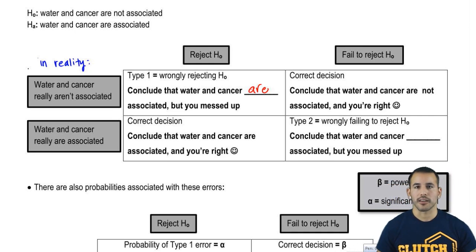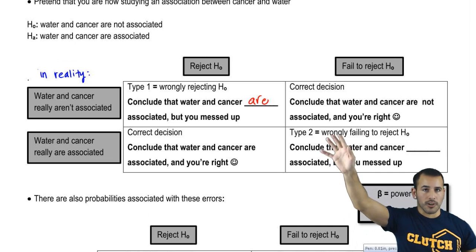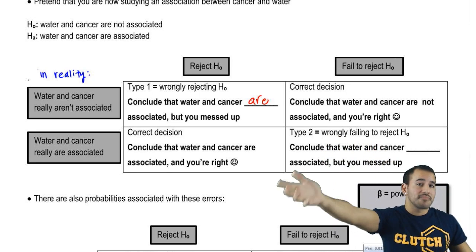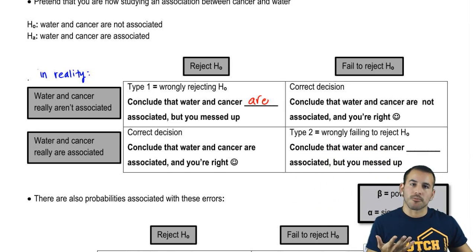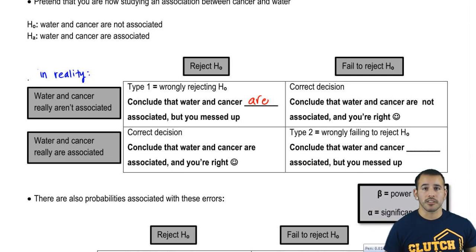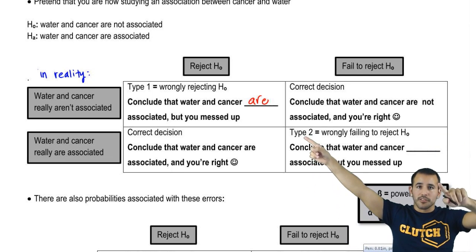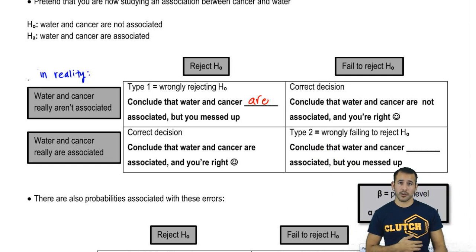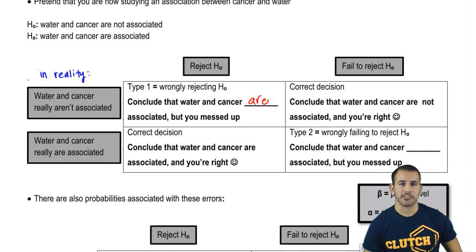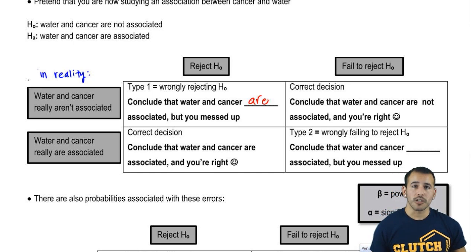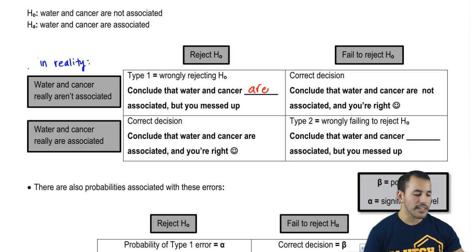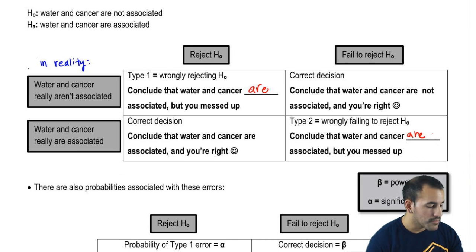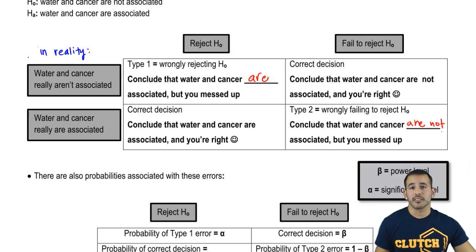Now let's go to the other end: we failed to reject the null hypothesis. We're concluding that water and cancer are not associated. We're saying the null isn't wrong — we can't say it is right, we can just say it's not wrong, at least the way we tested it this time. If in reality water and cancer aren't associated, we made a correct decision. But a Type 2 error is when we failed to reject — we didn't find enough support to say the status quo was wrong — when it actually was wrong. So we concluded that water and cancer are not associated, but in reality they actually are.